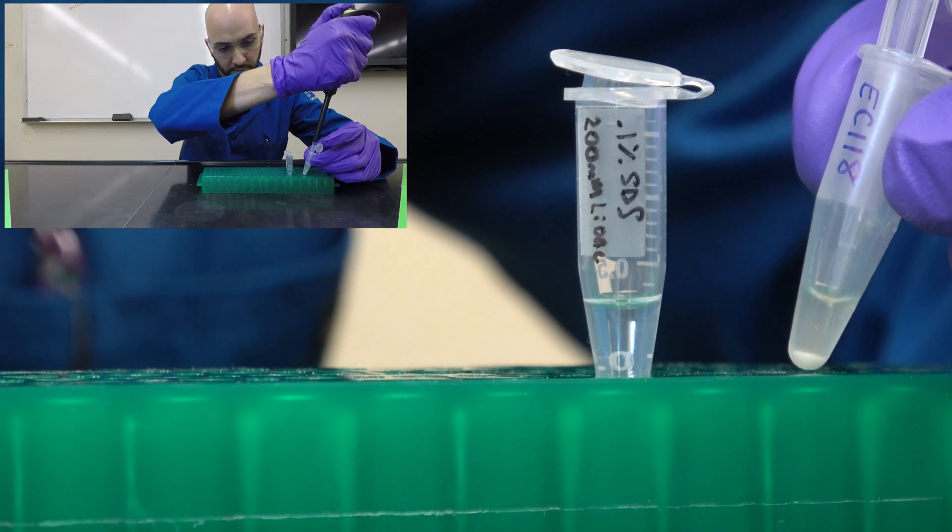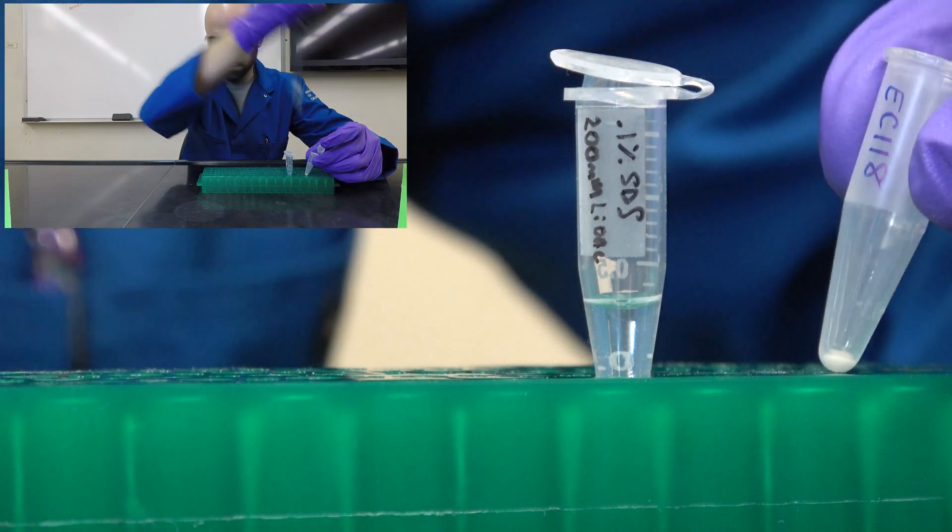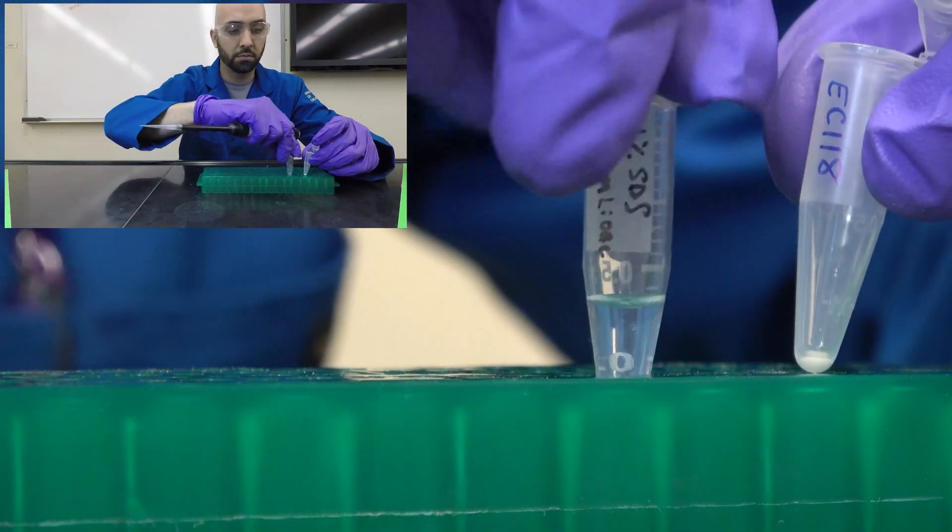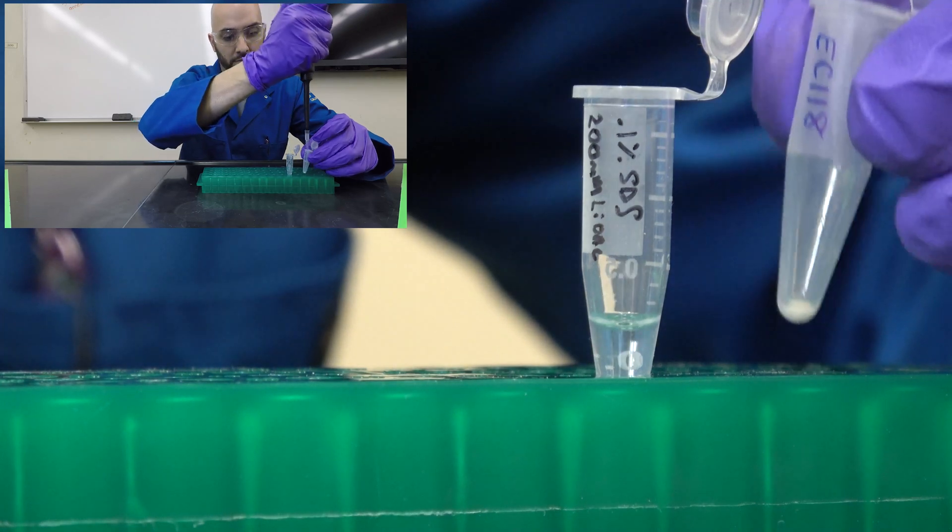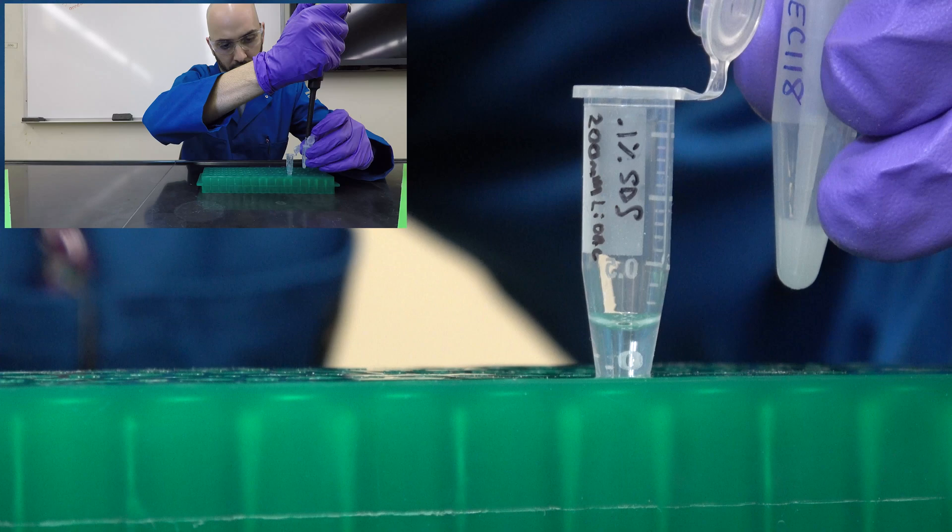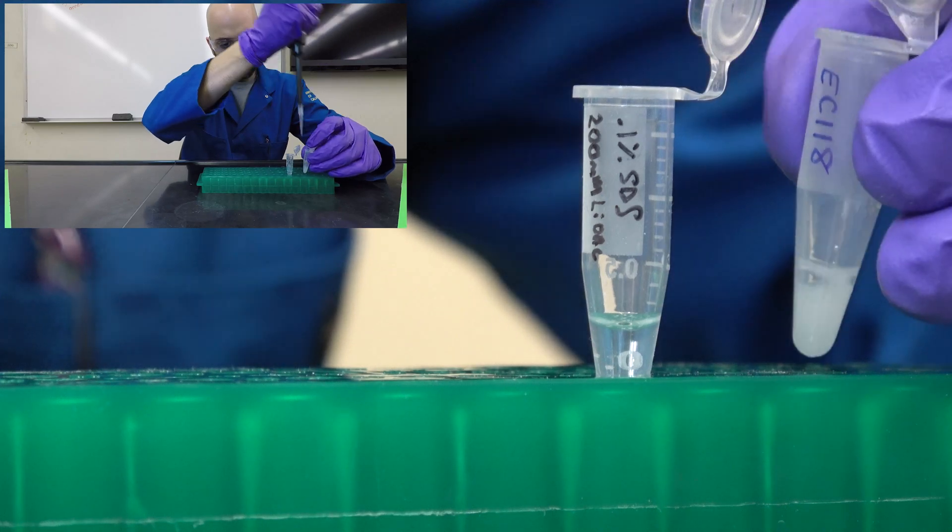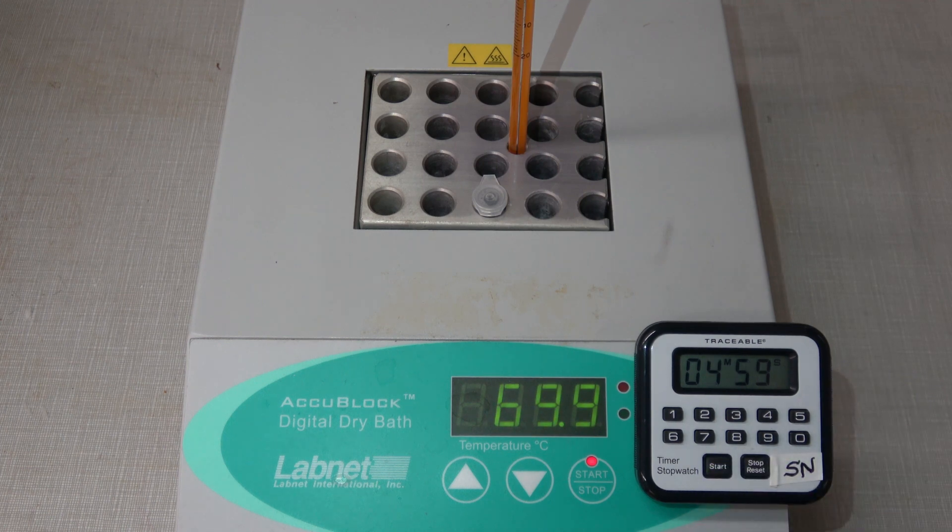Now that we've pelleted the cells, remove the media and incubate with 100 microliters of lysis buffer. 0.1% SDS will solubilize proteins and lipids, and the lithium acetate weakens the cell wall. Incubating at 70 degrees Celsius for 5 minutes will facilitate the lysis process.